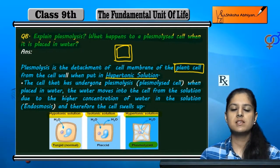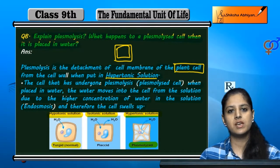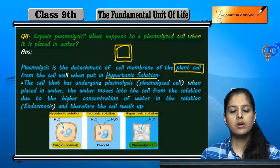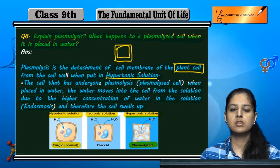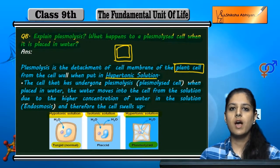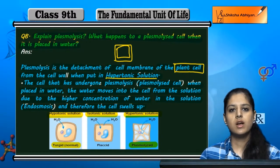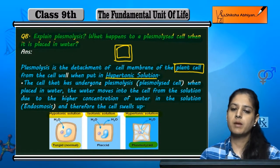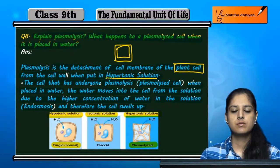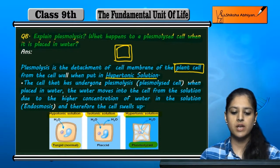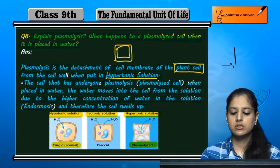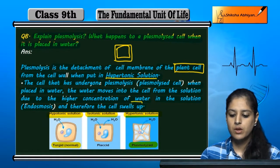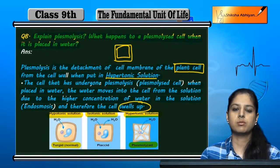This is a plasmolyzed cell which has already undergone shrinkage. Now, when we add it in a hypotonic solution or water, the water concentration outside is higher. So water will be transferred from outside into the cell, and ultimately the shrunken cell will swell up.